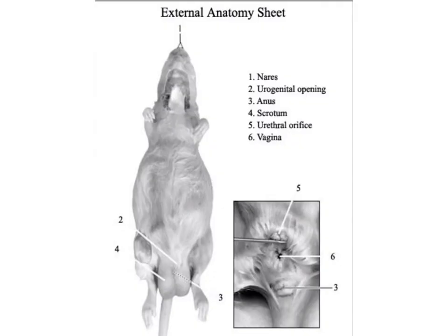Here we've laid the rat on its dorsal surface so the ventral or belly side is showing. This is a male, but in females only we would have the mammillary papilla or nipples — generally six on each side, three in the chest area and three in the abdominal area. In the female there are two openings close together in front of the anus: the most anterior is the urethral orifice leading to the urinary system, and the vaginal orifice is the external opening of the reproductive system, lying more posterior.